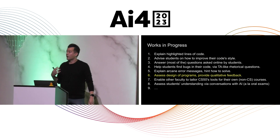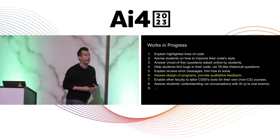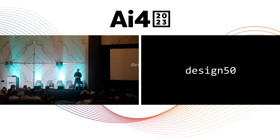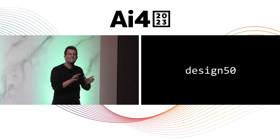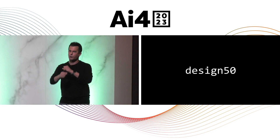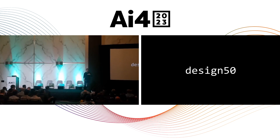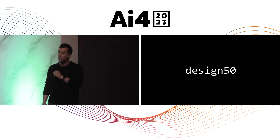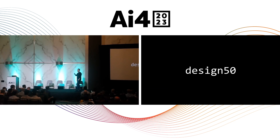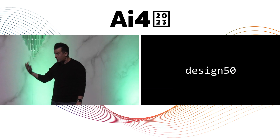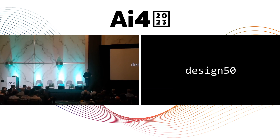Now is where things get a little more aspirational for the coming months and years. Assessing the design of programs and providing qualitative feedback: we've automated correctness with Check50, we've automated style with Style50, and we've always dreamed for years of having a Design50 tool that provides students with more subjective, qualitative assessment of their code — like 'yes this works and yes it looks pretty, but you can do better' — sort of like making a stronger argument in an English essay even if grammatically everything looks rock solid. We're close to this now because we also have years of data: assignments submitted by students that have already been assessed by humans, data we can now use to train these kinds of models.